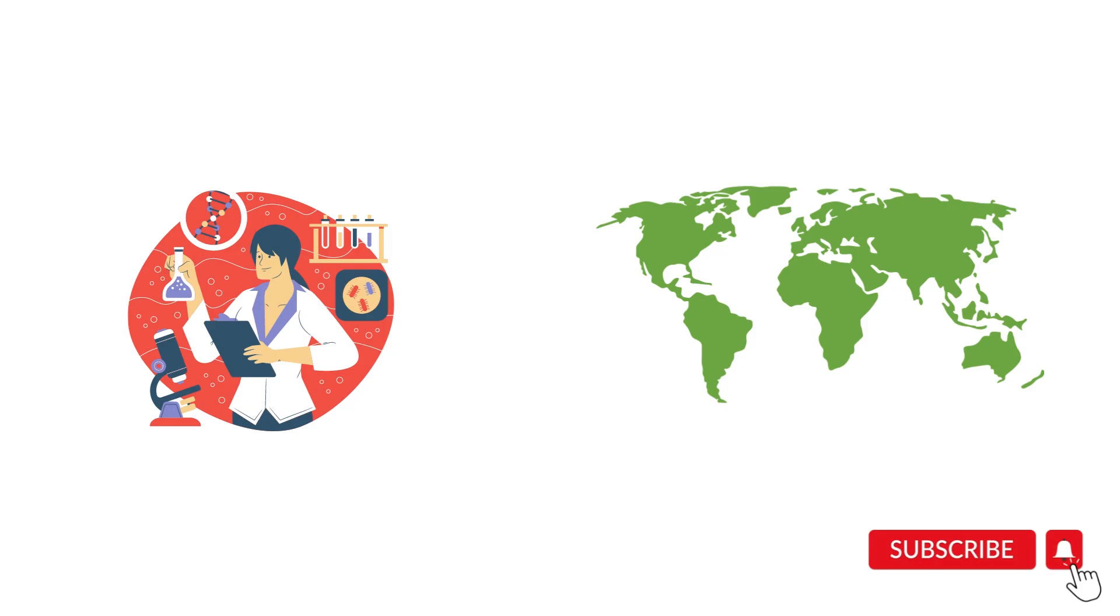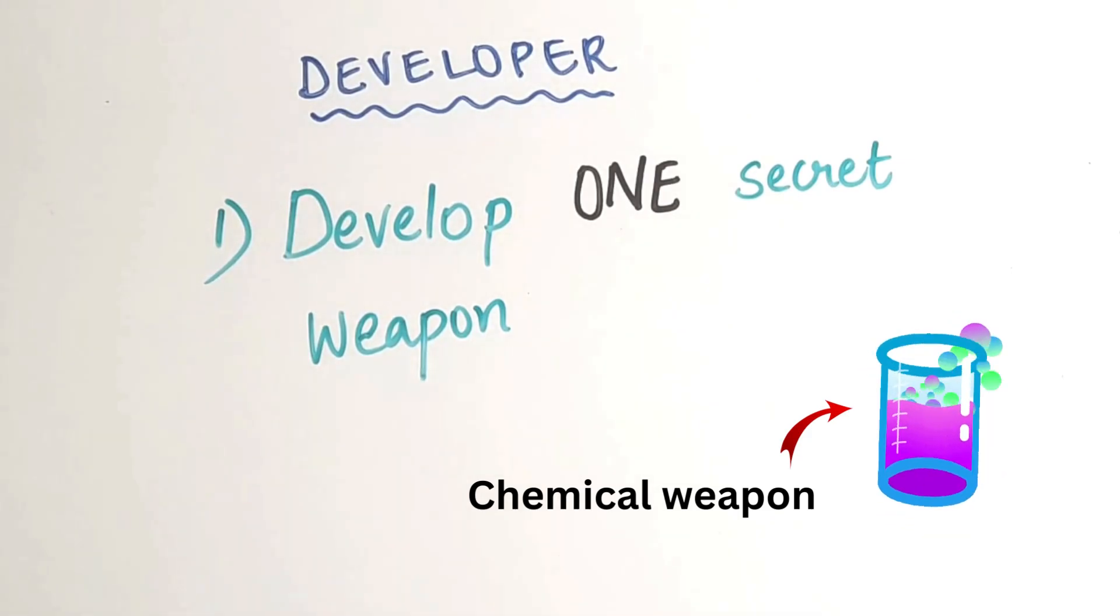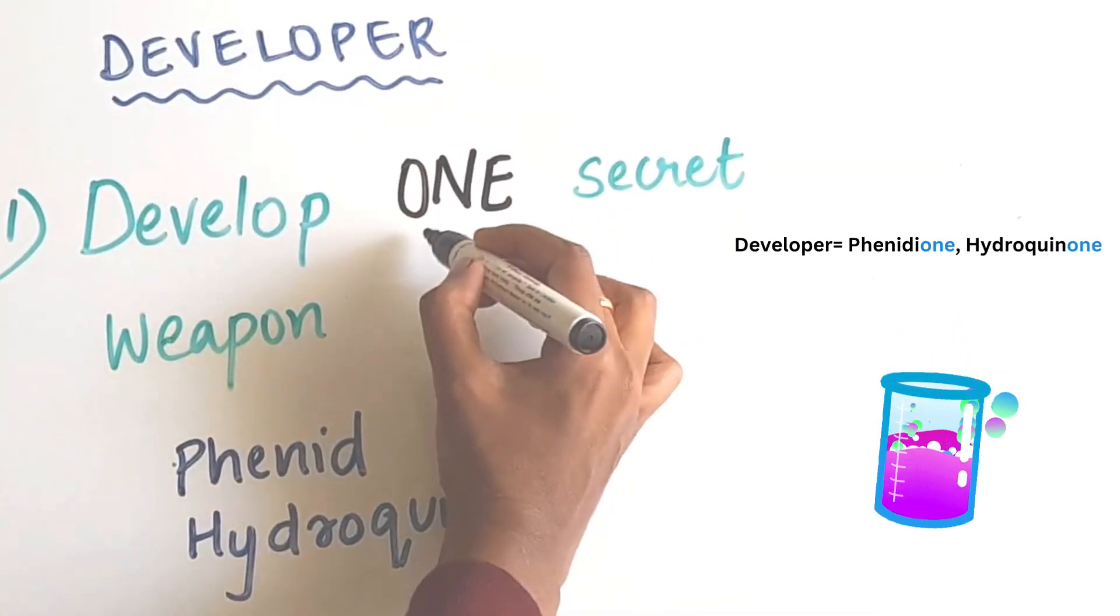Once upon a time, some really smart people in a country developed one secret weapon. This weapon was a chemical weapon.